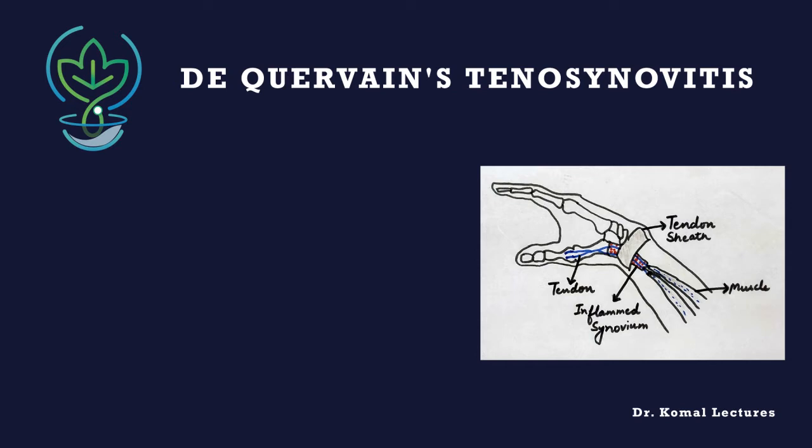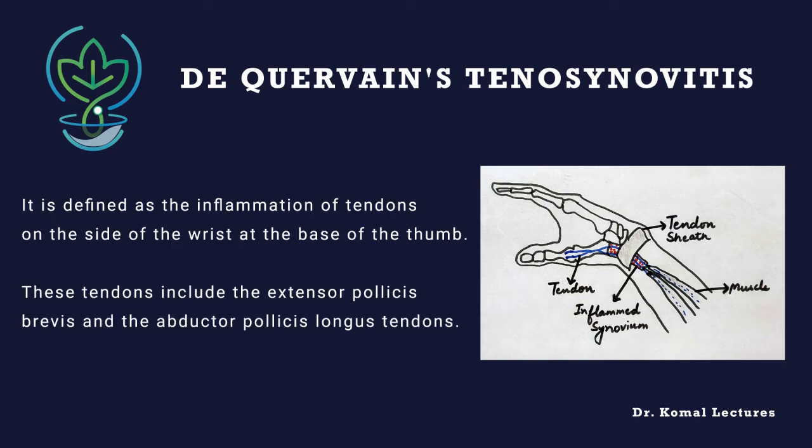De Quervain's tenosynovitis is defined as the inflammation of tendons on the side of the wrist and at the base of the thumb. These tendons include the extensor pollicis brevis and the abductor pollicis longus tendons. The mnemonic for remembering its symptoms is the secret code: PS thumb wrist.